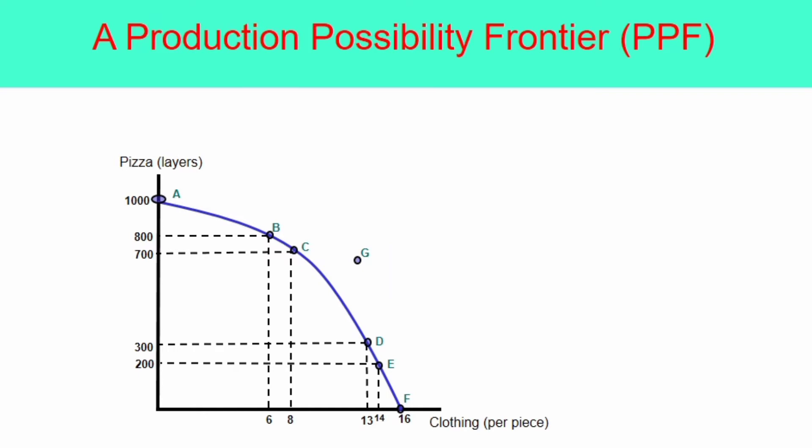However, any combination of pizza and clothing on or below the frontier or inside the PPF is attainable. It is possible to produce at point A, B, C, D, or F because they are on the PPF. Similarly, point H is possible or attainable also for the same reason. It is easy to produce at point H, say, 700 layers of pizza and 6 units of clothing. But is it optimal? No, because production can still be higher as point C or point B if full utilization of resources is achieved. So, point H here represents inefficient utilization of resources.